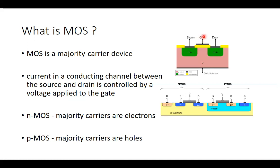When you apply a voltage at the gate, there is a sufficient number of charge carriers between source and drain, and current starts flowing from drain to source. This is an N-type MOSFET — N-MOS — where the majority carriers are electrons. When you apply a positive voltage at the gate, sufficient electrons gather in the channel. With the drain connected to positive and source to negative, current flows from drain to source.